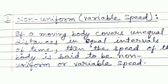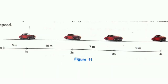The second type of speed is non-uniform or variable speed. If a body covers unequal distances in equal intervals of time, then the speed of the body is said to be non-uniform or variable. In the given figure, a car travels 5 meters in the first second, 10 meters in the second second, 7 meters in the third second, and 9 meters in the fourth second. In this case the speed of the car is changing, so it is said to be non-uniform.